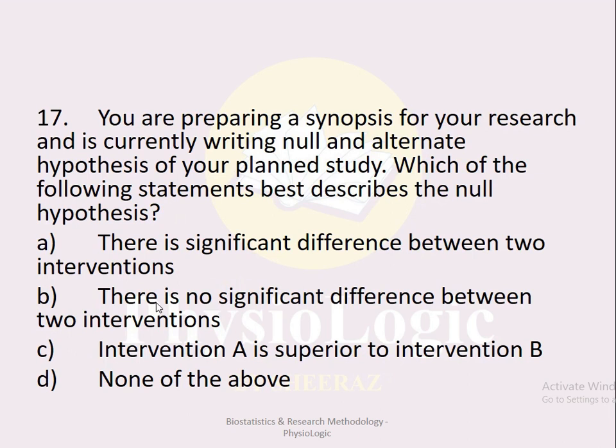MCQ number seventeen: You are preparing a synopsis and writing null and alternate hypotheses. Which statement best describes the null hypothesis? Option a there is a significant difference between two interventions, option b there is no significant difference between two interventions, option c intervention A is superior to intervention B, option d none of the above. The correct option is option b. A null hypothesis always states there is no statistically significant difference between two interventions, while the alternate hypothesis states there is a difference.